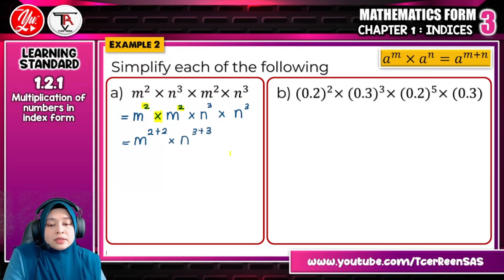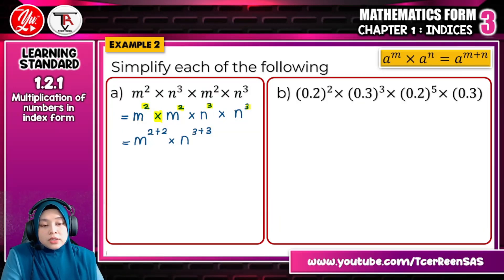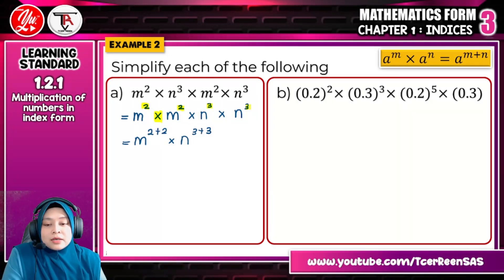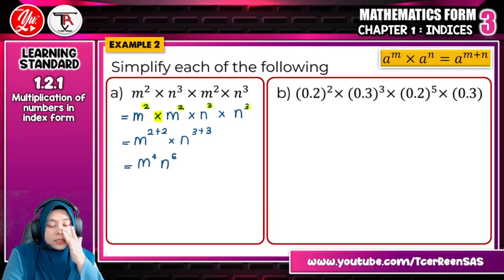M multiply m, so here the answer is m, because this is darab, the index must be tambah. Sama dengan n, multiply n, 3 plus 3. Here's one thing you need to note. If m or any variable A to Z, you don't need to put any operation here. Tak ada darab di sini. You just m to the power of 4, n to the power of 6 is okay. Tak perlu letak, letak pun tak salah. So this is the final answer for A.